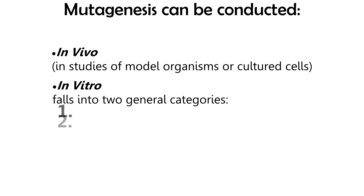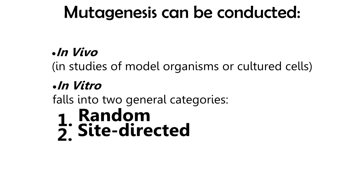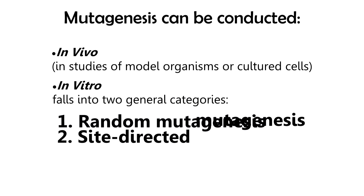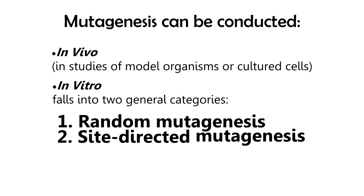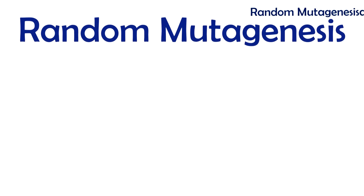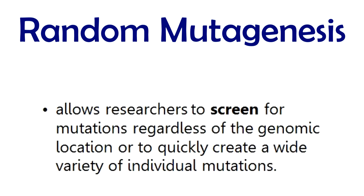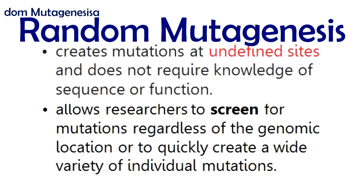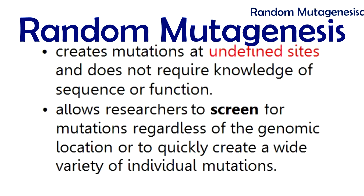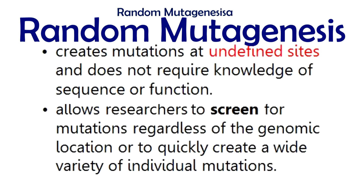Mutagenesis can be conducted in vivo or in vitro. It has two main categories: random and site-directed mutagenesis. Random mutagenesis allows researchers to screen for mutations regardless of the genomic location, or to quickly create a wide variety of individual mutations by creating mutations at undefined sites. This does not require knowledge of sequence or function.